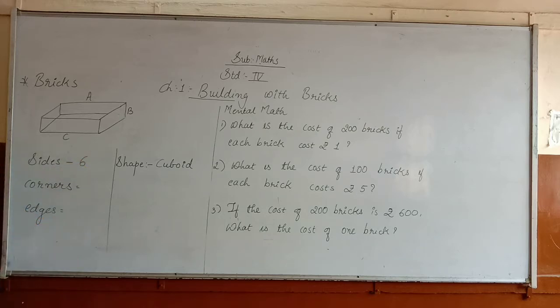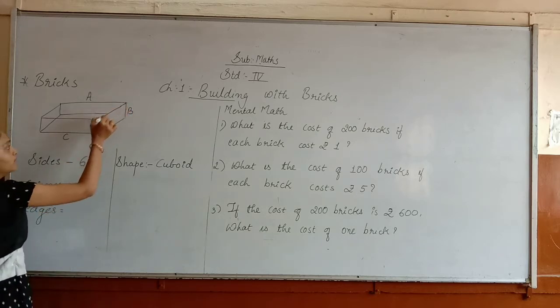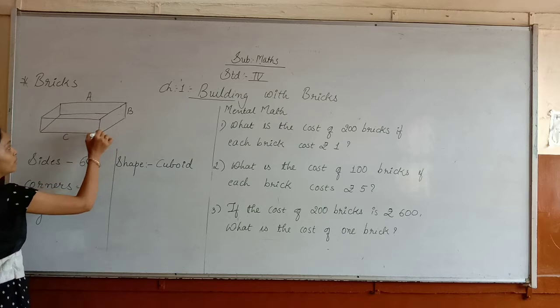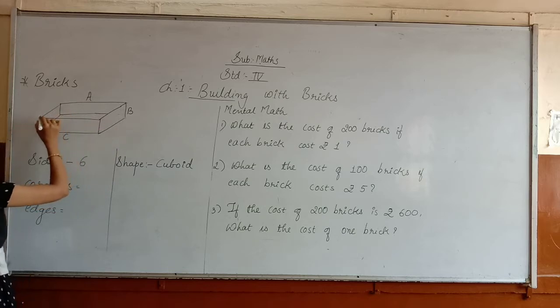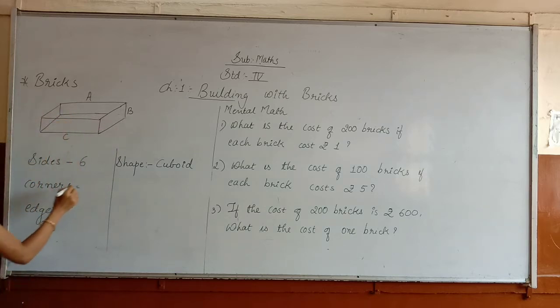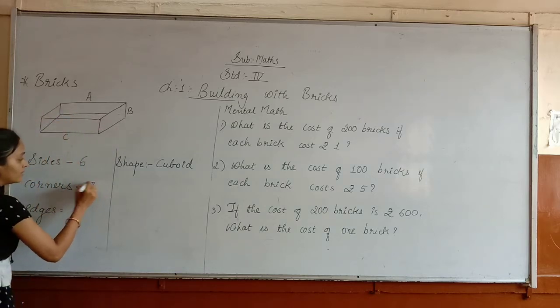How many corners are there in this brick? 1, 2, 3, 4, 5, 6, 7, and 8 corners are there.